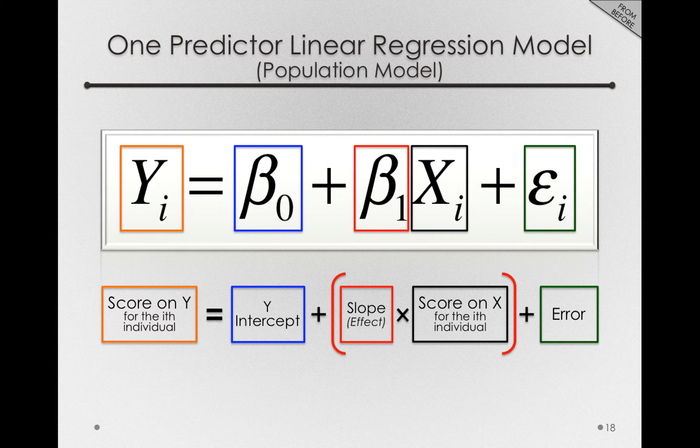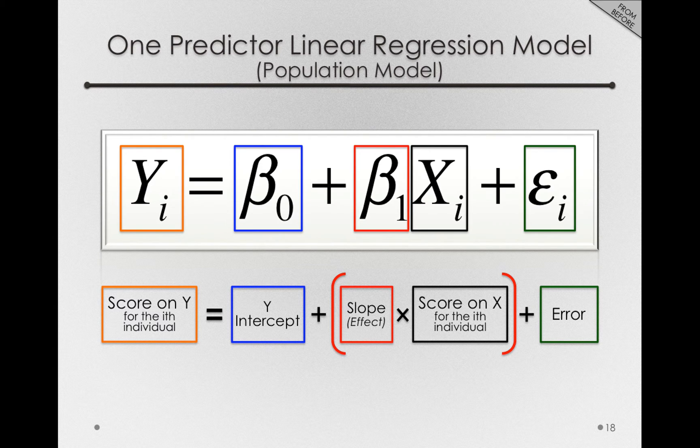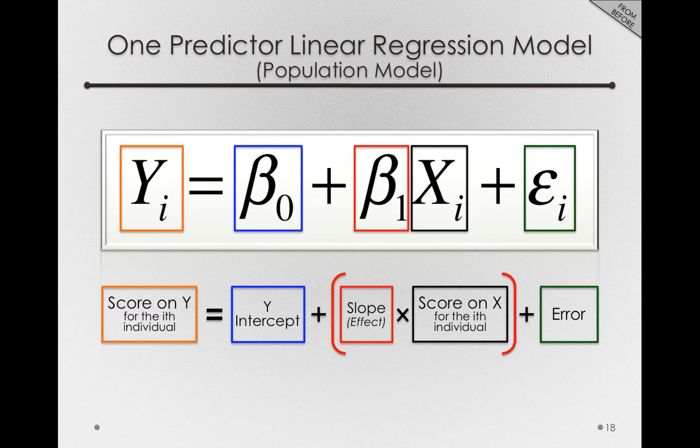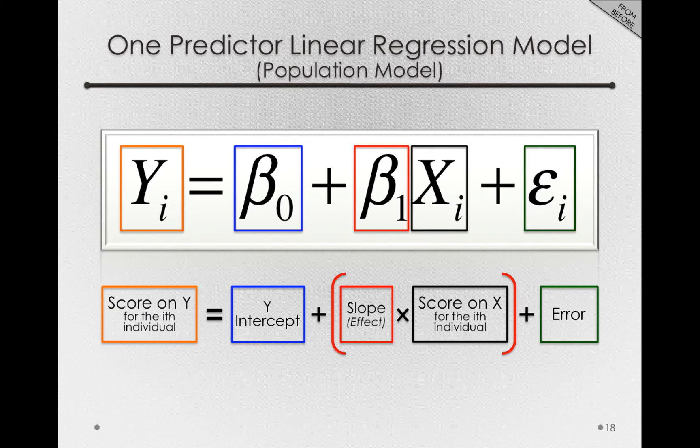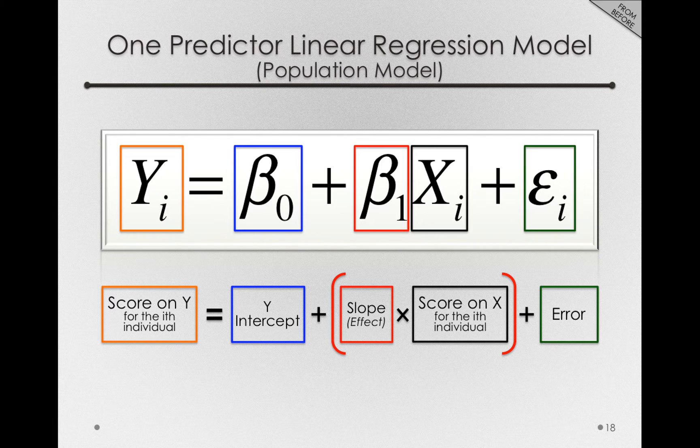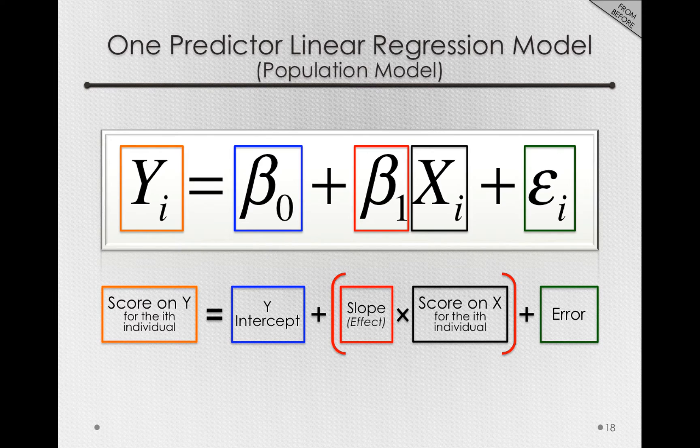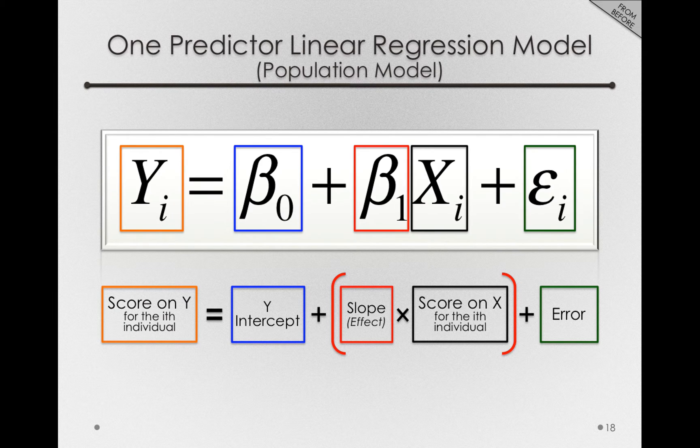In the previous module, we developed the one-predictor linear regression model, where we were describing an individual score on y as a function of the y-intercept, beta sub 0, plus beta 1 times xi, so the slope in the model times the score on x for an individual, plus e sub i, the individual error.